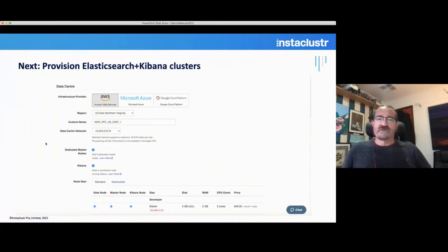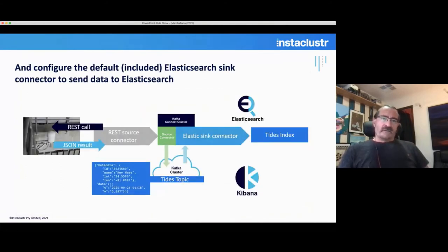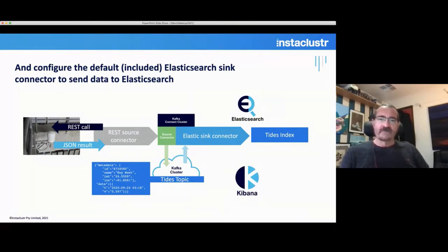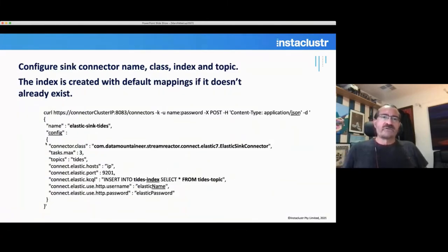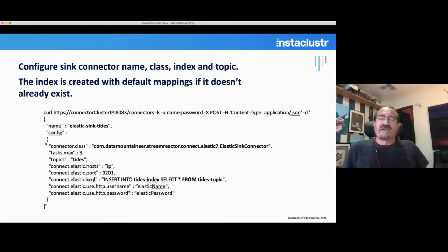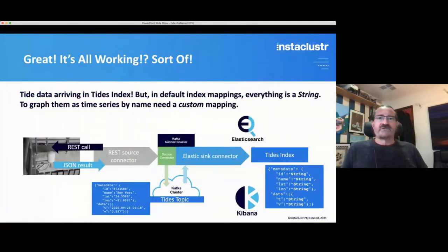Now we have tidal data coming into the TIDES topic — what next? We provision the Elasticsearch and Kibana clusters using our managed console. Then we configure the default Elasticsearch connector to send data to Elasticsearch — we actually have one included by default, so you don't need to load it from an S3 bucket. It's straightforward to configure and start running. You configure the sink connector name, the class, the index and topic. To start with, the index is created with default mappings — that's just how Elasticsearch works if the index doesn't already exist.